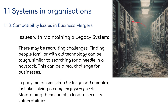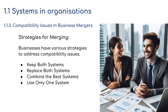Legacy mainframes can be large and complex — like solving a very complex jigsaw — and this can lead to security vulnerabilities and reduced efficiency. In terms of the merger itself, what can we do with the systems in place? If companies are far apart and workflow isn't significantly affected, we could keep both systems. If there will be significant change, we might replace both systems, combine the best parts of each into one system, or choose the better system and migrate one company over to it.